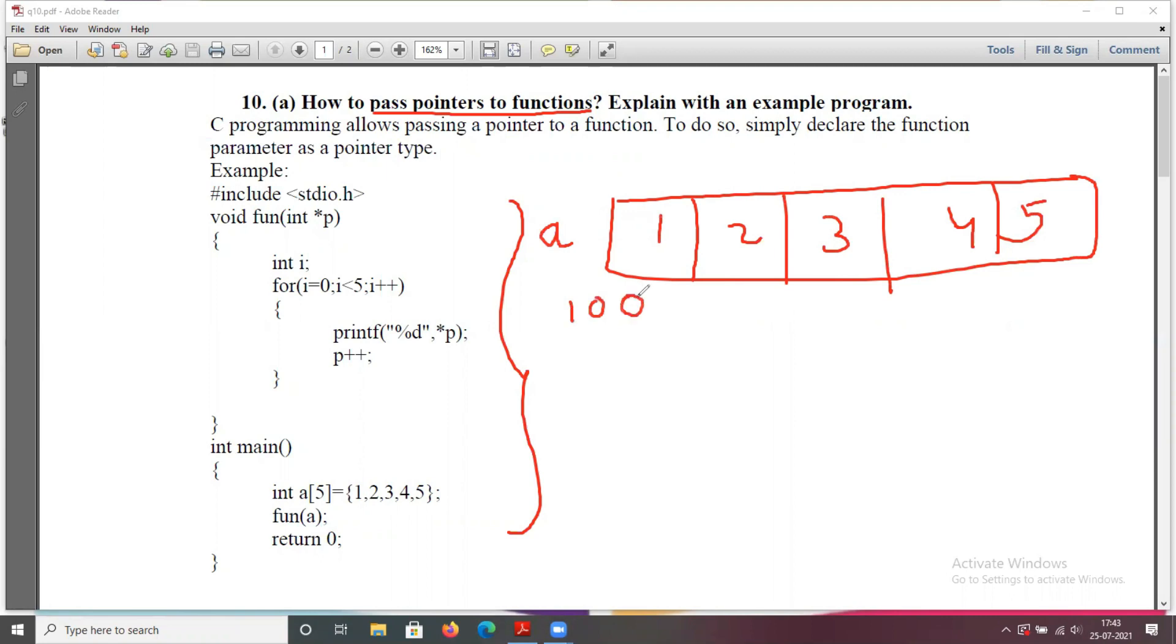Now I call a function fun(a). Here fun(a) means passing the address 100. This 100 is assigned to p. So p is a pointer variable that stores the address of array a, which is 100.